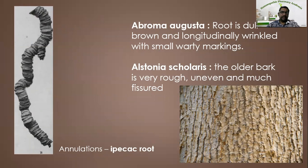See the annulations which are seen in ipecac root — these are the transverse annulations. Ipecacuanha — the root is dull brown and longitudinally ringed with small warti markings. With these identification points we can identify Ipecacuanha. Now, Alstonia scholaris — we can identify it with the older bark having a very rough, uneven, and much-fissured surface.